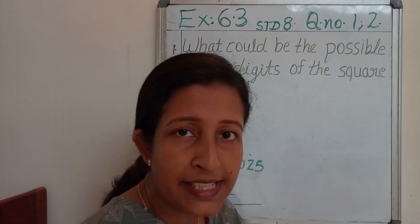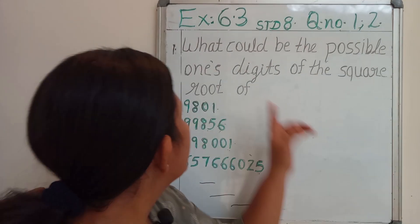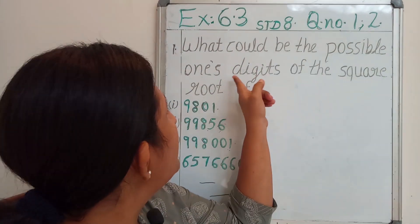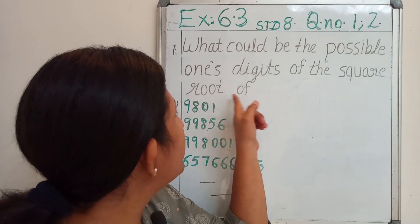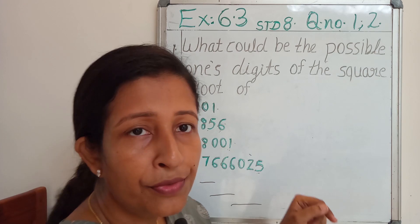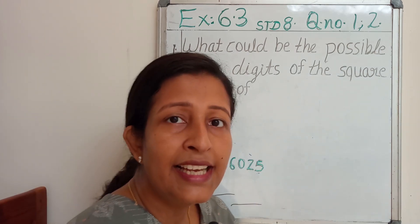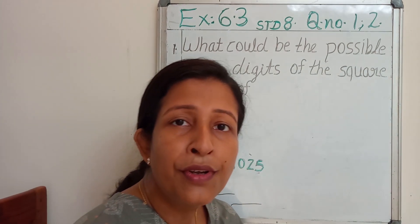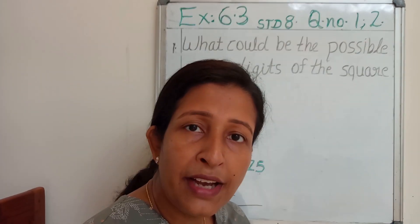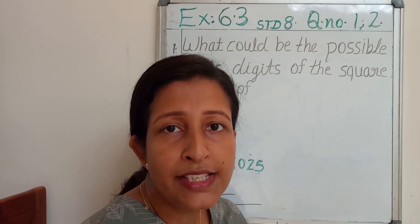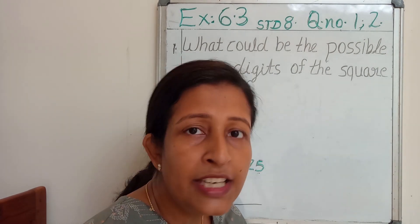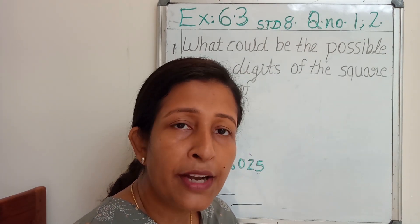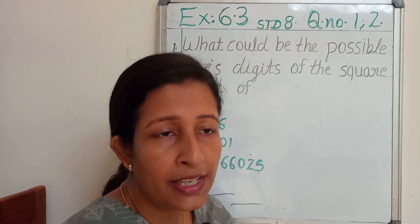Question number 1 says that, what could be the possible 1's digit of the square root of these numbers? If we are going to find the square root of each and every number, it will be time consuming. So we are going to apply a concept.